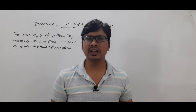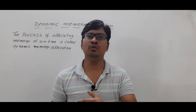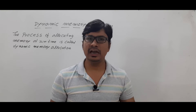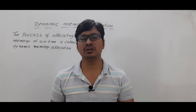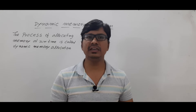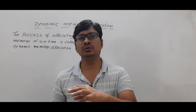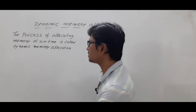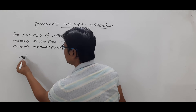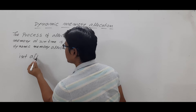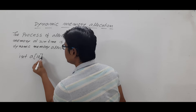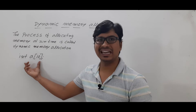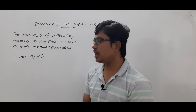Let me take an array. An array is a collection of homogeneous elements. You can create an integer array and store a collection of integer constants; similarly if you create a character array you can store a collection of characters only. Let's say I have declared array A of size 10 — then you can store a collection of 10 integer constants.